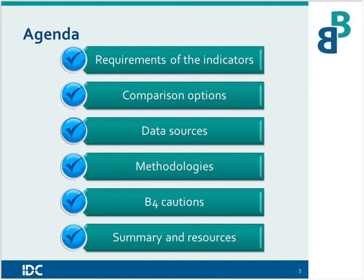With this webinar, we'll cover the basics of B4. This webinar is intended to provide an overview of this indicator for staff who are new or who want a refresher. It is not meant to take a deeper dive into this indicator. We'll start by discussing the requirements of the indicators, the two comparison options for indicator B4, and also the data sources that you'll need. We'll then review common methodologies that states can use to identify districts with significant discrepancy, discuss some cautions for indicator B4, particularly around its relationship with the other equity requirements in IDEA, and end with a summary and some helpful resources.